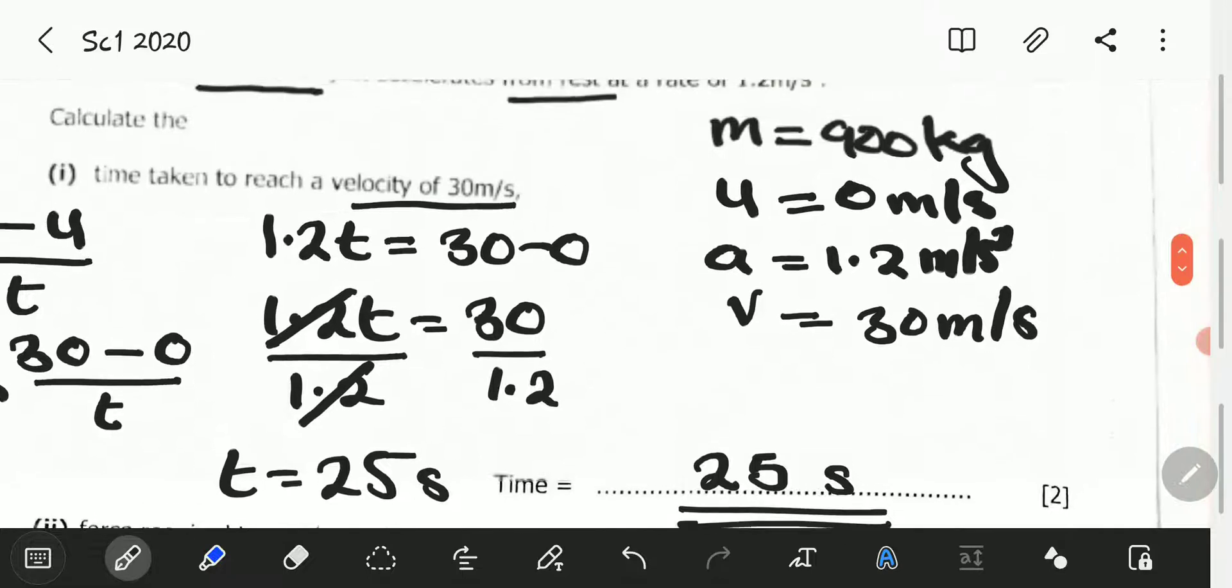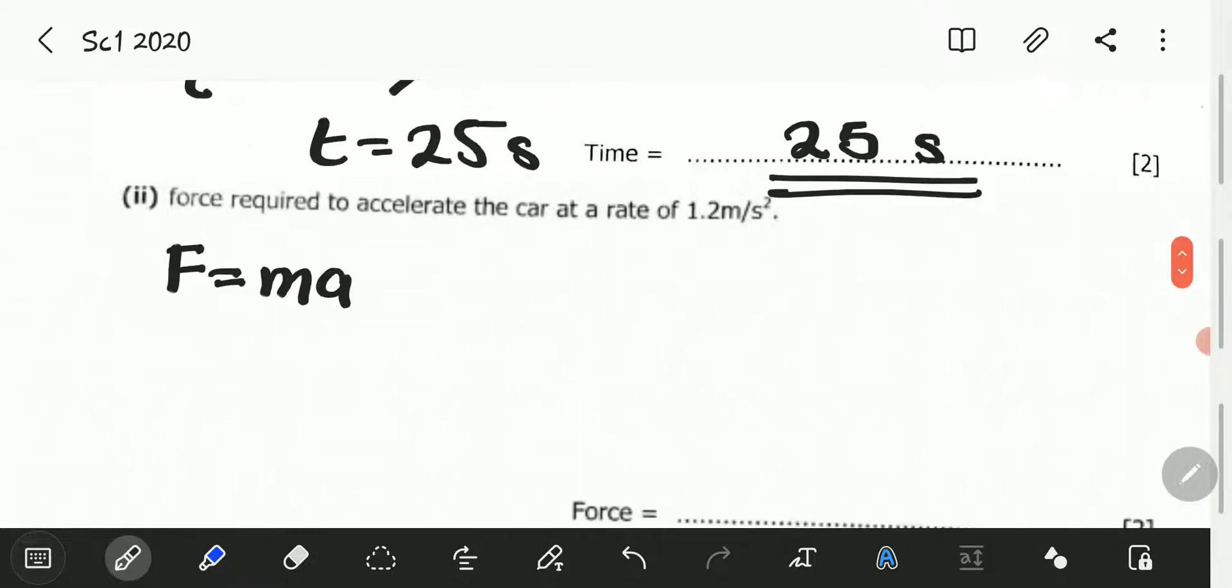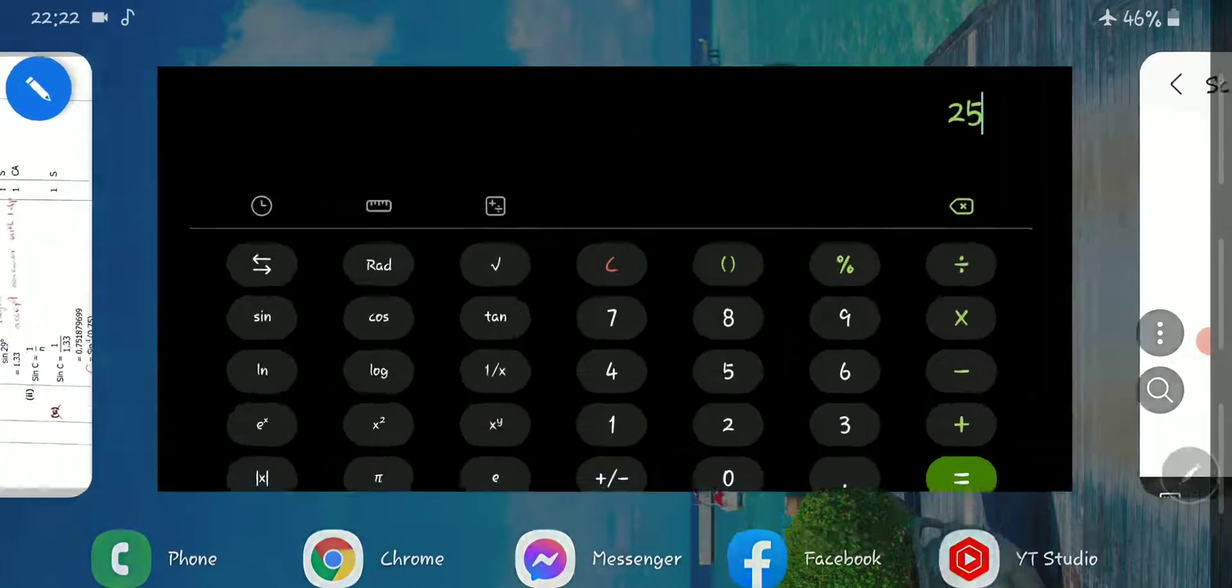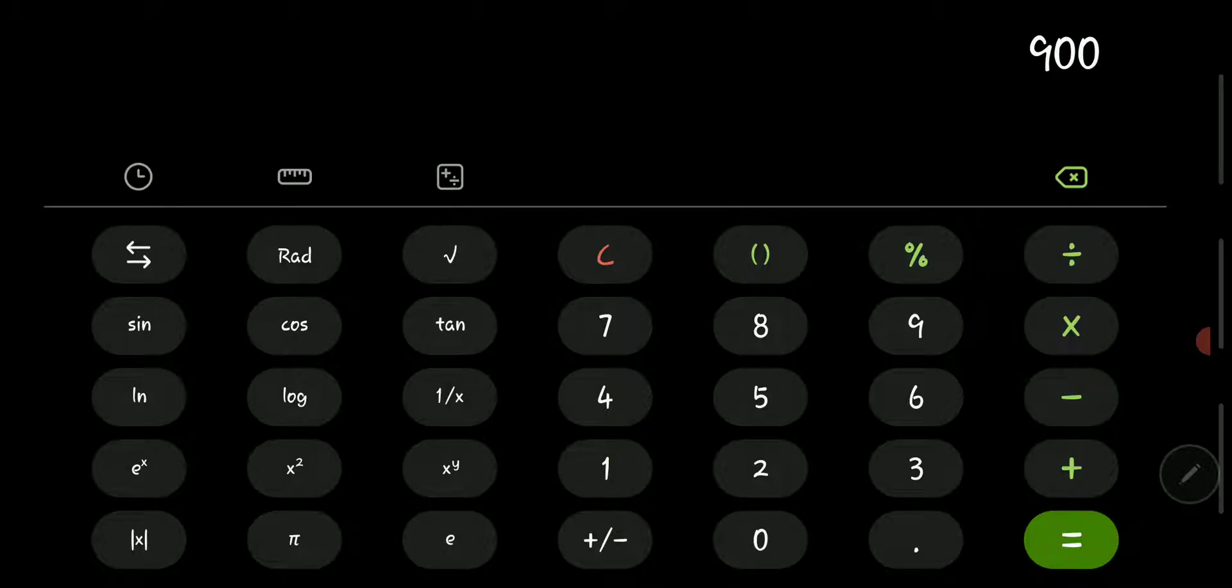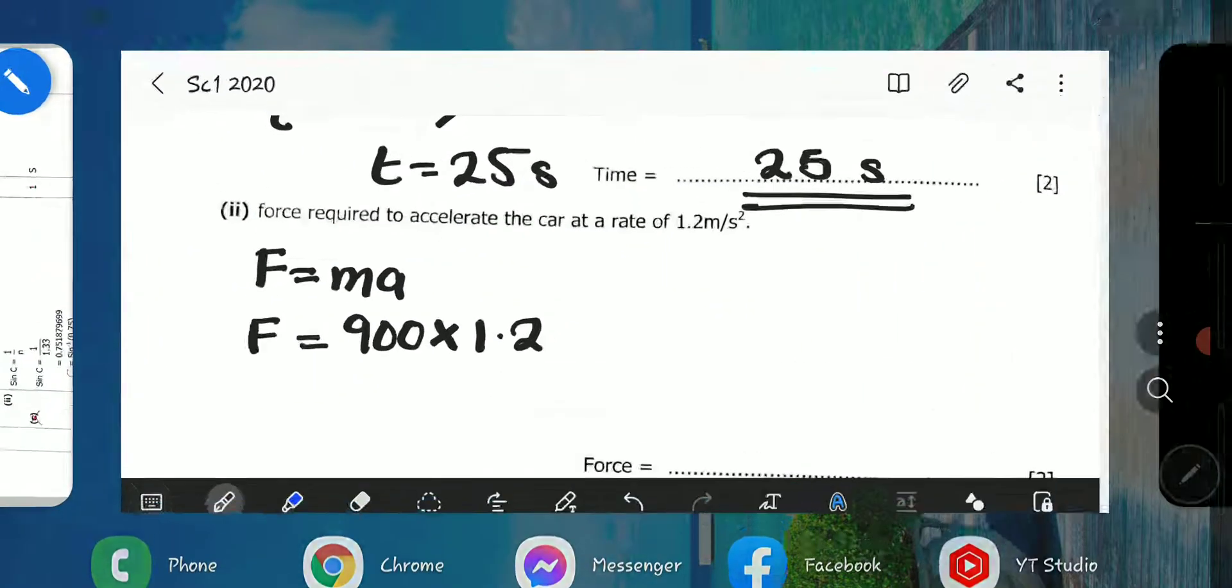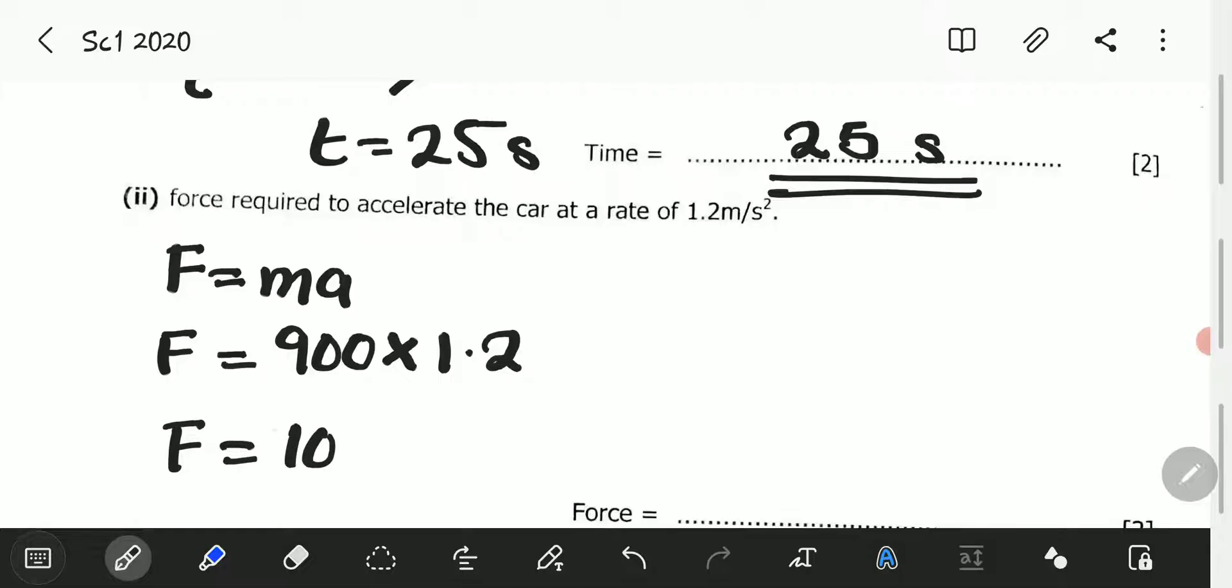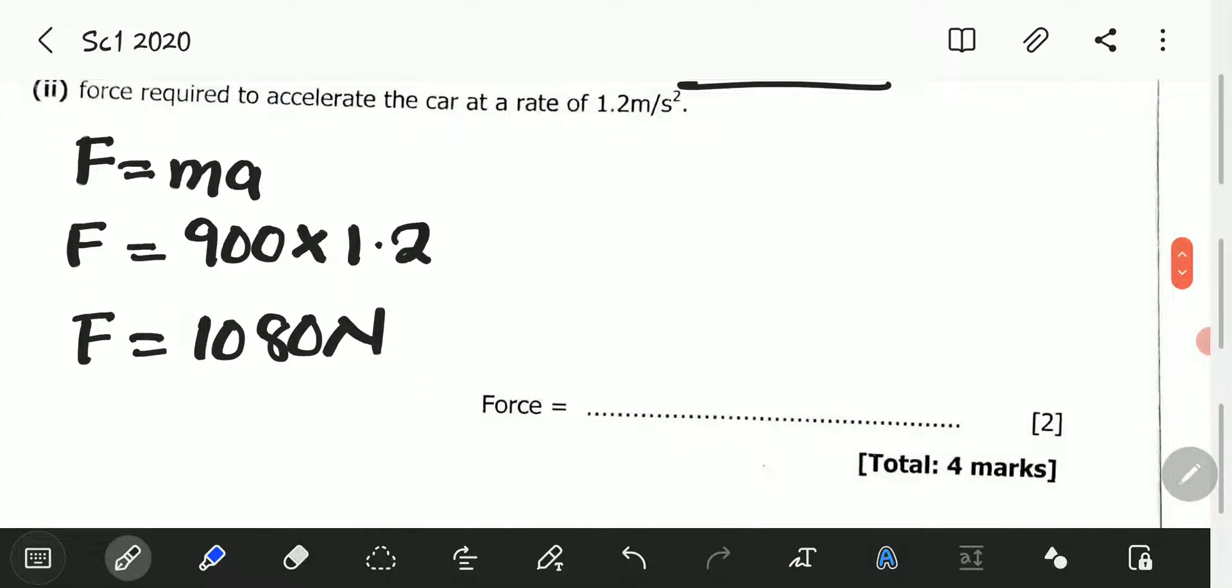What is the mass? We have been given the mass to be 900 kilograms. Force is equal to 900 kilograms multiplied by the acceleration which is 1.2. 900 multiplied by 1.2 is 1,080. F is equal to 1,080. The units for force are Newtons, so force is equal to 1,080 newtons.